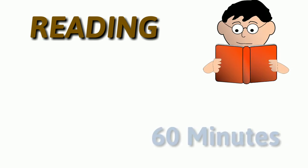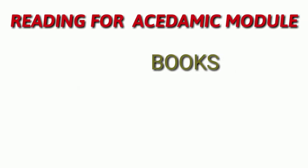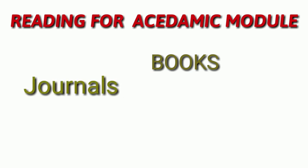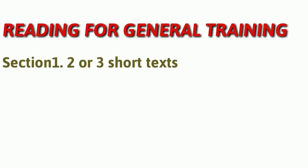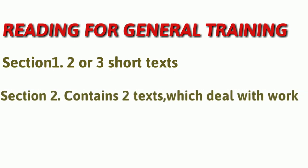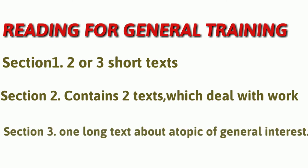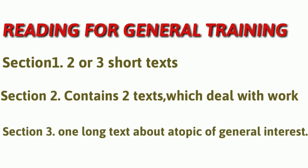The Reading session consists of 60 minutes. For the Academic module, there will be three reading texts from books and journals, and all topics are of general interest to students at undergraduate and postgraduate level. For General Training, it consists of three sections: section one contains two or three short texts; section two contains two texts dealing with work, such as job descriptions, contracts, and training material; and section three contains one long text about a topic of general interest.